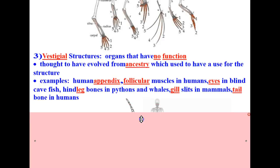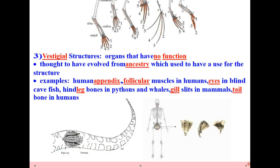Examples include the human appendix, follicular muscles in humans, eyes in blind cave fish, hind leg bones in pythons as pictured here on the left, and whales, gill slits in mammals which are still evident during the development of humans, and tailbone in humans, as pictured here.